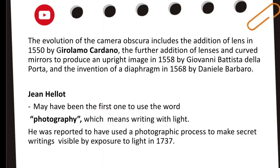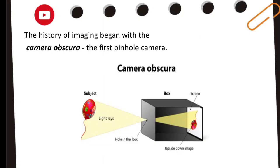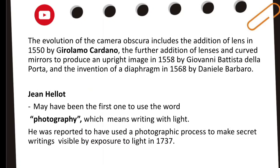The evolution of camera obscura includes: the addition of a lens in 1550 by Girolamo Cardano; the further addition of lenses and curved mirrors to produce an upright image in 1558 by Giovanni Battista della Porta; and the invention of the diaphragm in 1568 by Daniel Barbaro. So the camera obscura evolved through upgrades — from producing an upside-down image, to by 1558 producing an upright image, and later with the addition of the diaphragm for further adjustment.